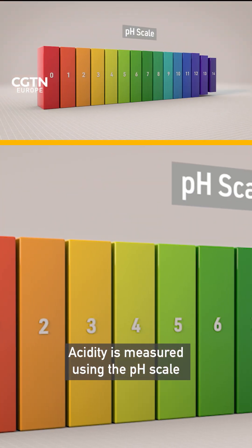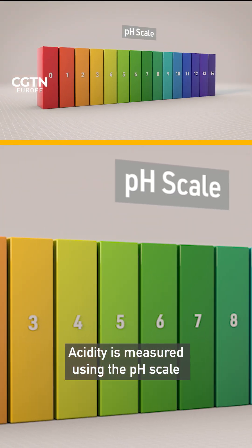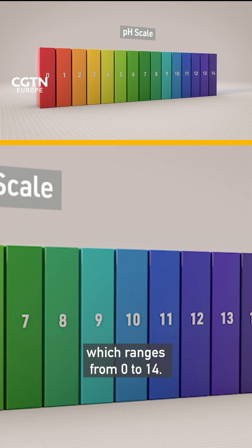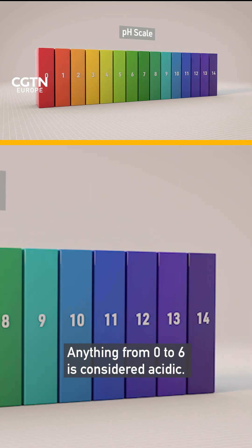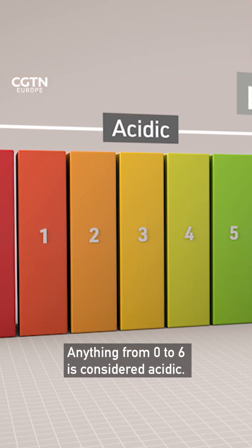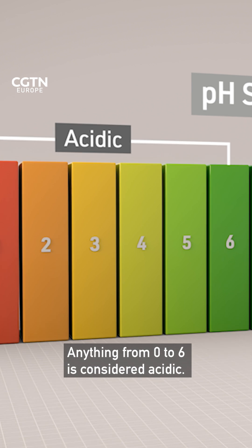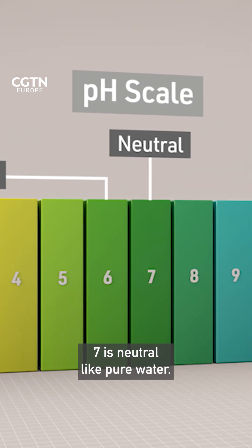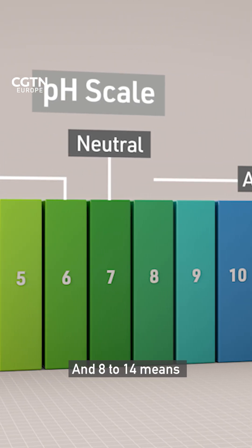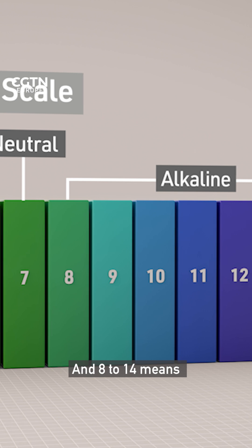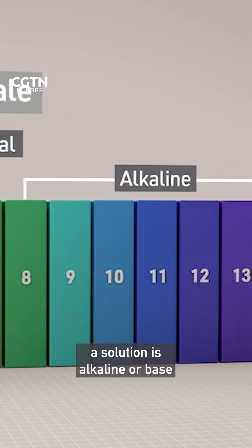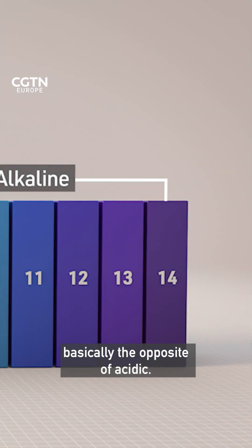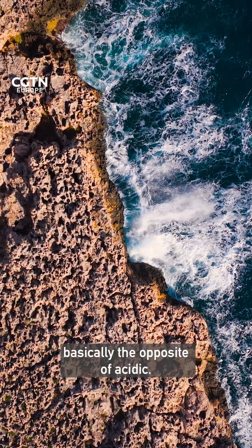Acidity is measured using the pH scale, which ranges from 0 to 14. Anything from 0 to 6 is considered acidic. 7 is neutral, like pure water, and 8 to 14 means a solution is alkaline or base — basically the opposite of acidic.